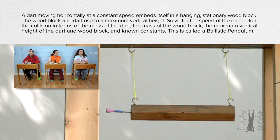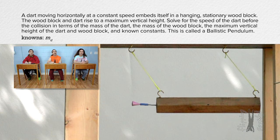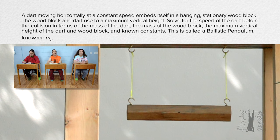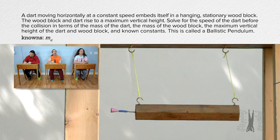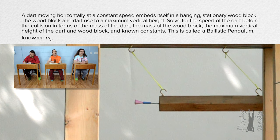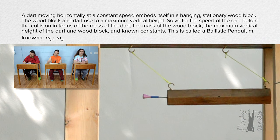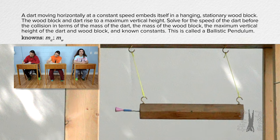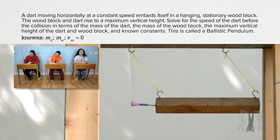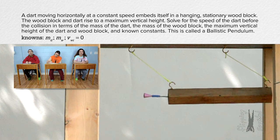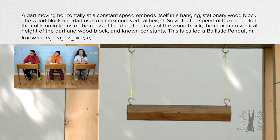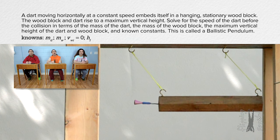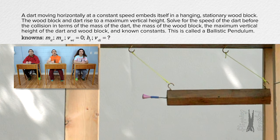Let's label some variables. The mass of the blow dart is m sub d for dart. The mass of the wood block is m sub w for wood block. The initial velocity of the wood block is zero. The maximum vertical height of the dart and wood block is h final. And we are solving for the initial velocity of the dart, so v sub di equals question mark.